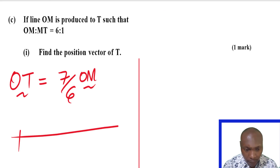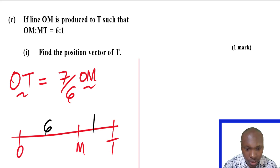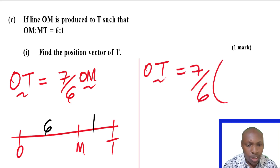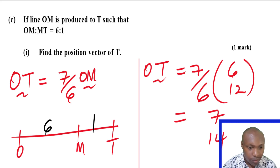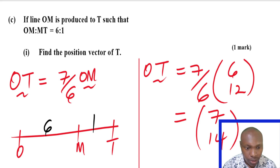We already have vector OM as (6, 12). So OT equals 7/6 times (6, 12). That gives 7/6 times 6 equals 7, and 7/6 times 12 equals 14. Therefore the position vector of T is (7, 14).